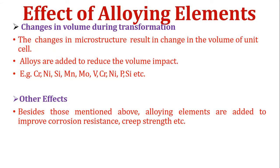Fifth effect: change in volume during transformation. The change in microstructures results in a change in volume of the unit cell. Alloys are added to reduce the volume impact. Elements such as chromium, nickel, silicon, manganese, molybdenum, vanadium, and phosphorus change volume at the time of microstructure formation. Besides these, alloying elements are also added to improve corrosion resistance and creep resistance. These are the basic effects of alloying elements.